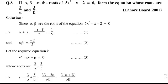The product of roots, alpha·beta, equals c/a. The value of c is −2 and a is 5, so alpha·beta = −2/5. This is Equation Number 2.